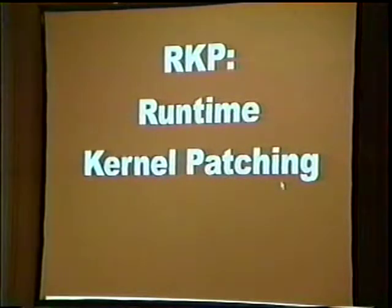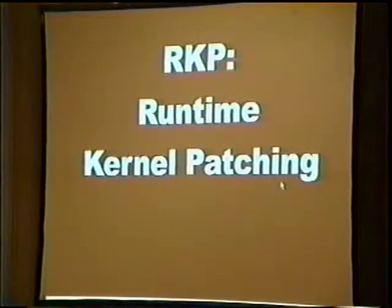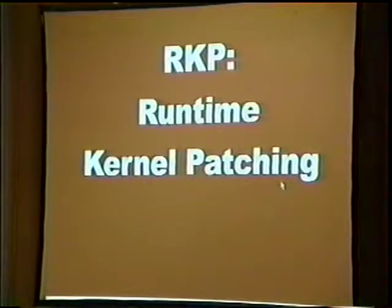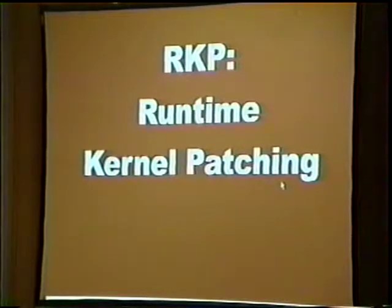I wrote an article for Phrack magazine about a year ago on runtime kernel patching to remove the functionality of SeAccessCheck, and that actually still works. The four-byte patch I wrote about was improved — a hacker emailed me and said he figured out how to do it in one byte. In fact, looking at the byte he gave me, it was only one bit different than what was already there. So it was actually a one-bit change in the system that removed all access control checks. That worked because his patch was in the check of the flag indicating whether the call came from kernel mode — so it always thought it came from kernel mode and skipped the access check entirely.